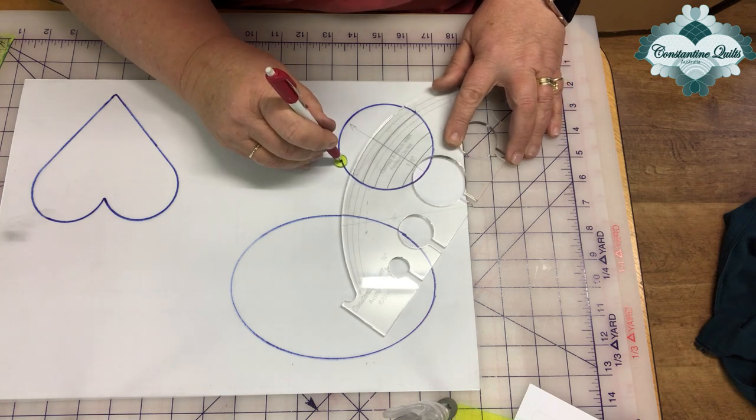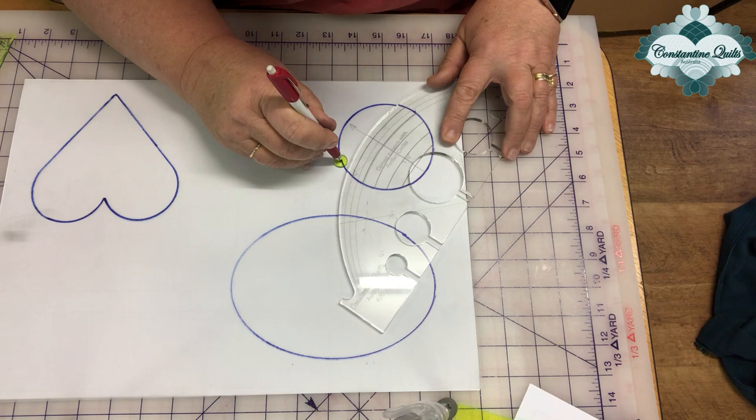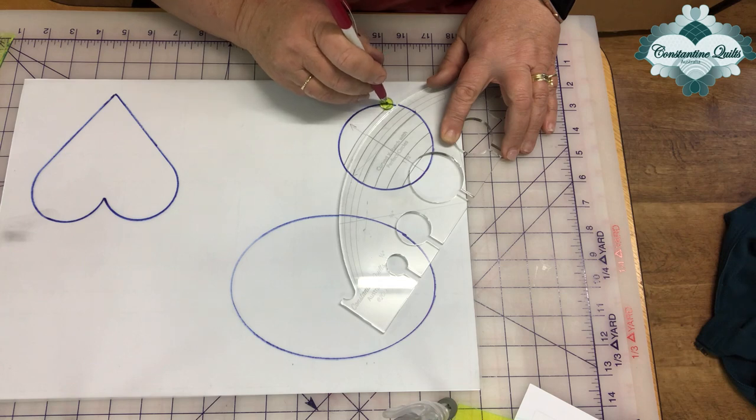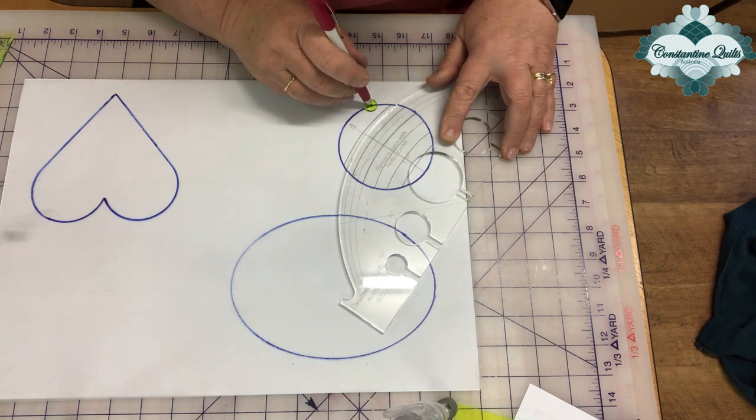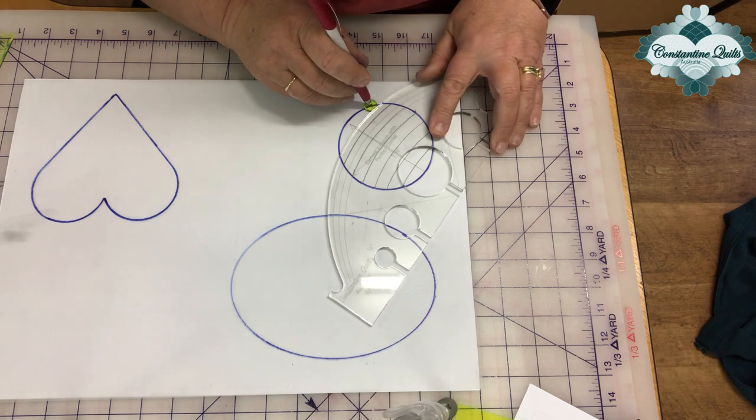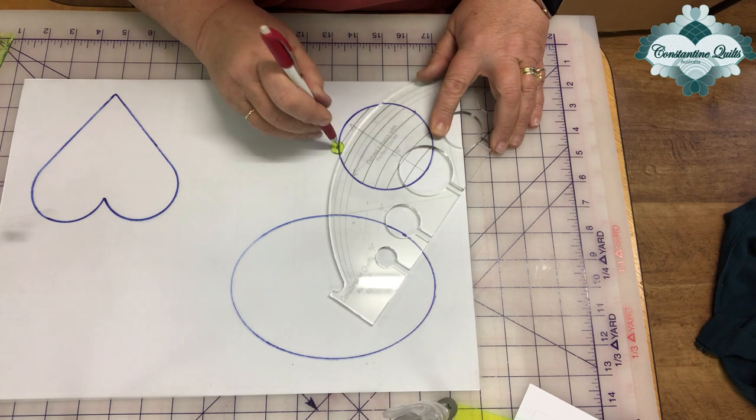Stitch in the ditch, move my ruler, matching my center direction plus the echo line on the ruler and across. Stitch in the ditch, move my ruler, matching all lines and across.